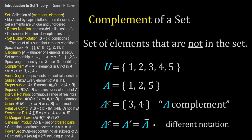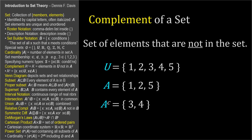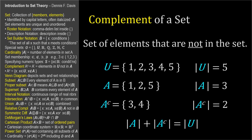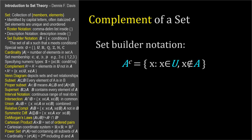The complement of a set is another set. The universal set has a cardinality of 5 since it has 5 elements. The cardinality of set A is 3, and the cardinality of A complement is 2. The cardinality of a set plus the cardinality of its complement will always equal the cardinality of the universal set. In set builder notation, the complement of A is the set of all X such that X is an element of the universal set and X is not an element of A. Some more identities: the complement of the empty set is the universal set, and the complement of the universal set is the empty set.